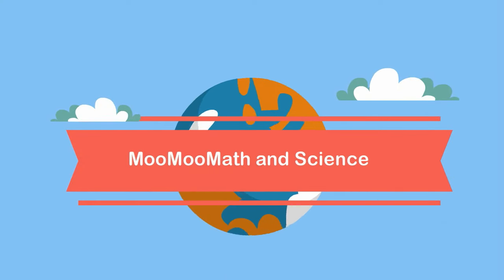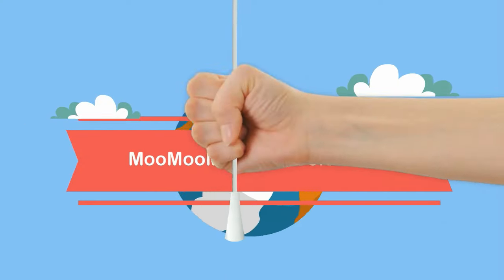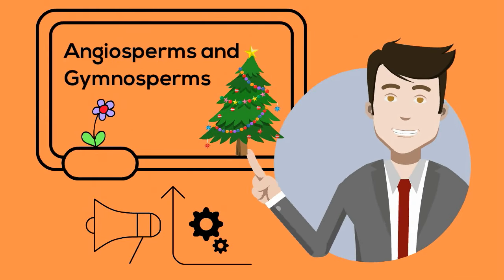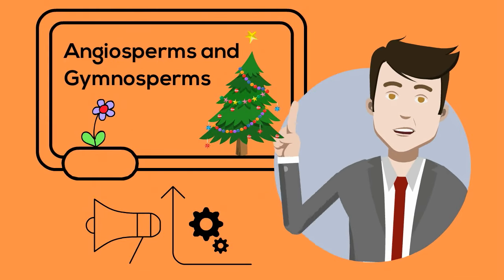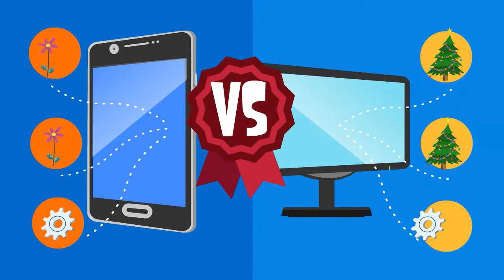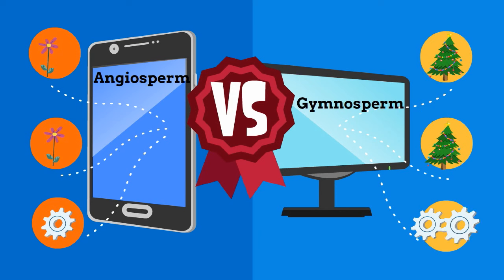Welcome to MooMath and Science. In this video I would like to talk about Angiosperms and Gymnosperms. In major ecosystems, plants form the foundation or base of the system. Plants provide oxygen and energy for many of the other organisms. Plants can be divided into two major categories: Angiosperms and Gymnosperms.